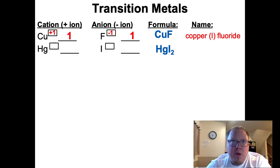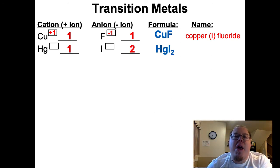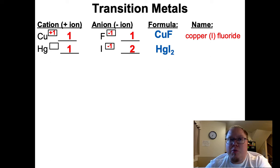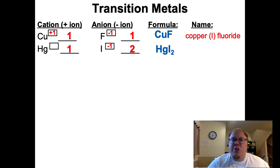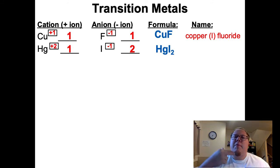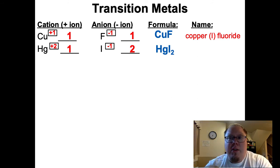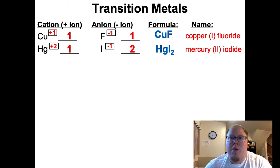Mercury and iodine - HgI2. The ratio here is 1 to 2. We look up iodine's charge - negative 1. If the ratio is 1 to 2 and iodine is negative 1, and there are two of them, a negative 1 and a negative 1 makes negative 2. Compared to the one mercury, the only possible charge it could be is positive 2, to cancel out the two negative 1s of the iodine. So the charge on mercury is positive 2. Naming the pieces: mercury and iodine becomes iodide. So this is mercury 2 iodide.